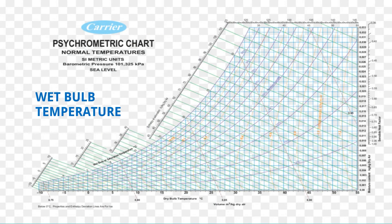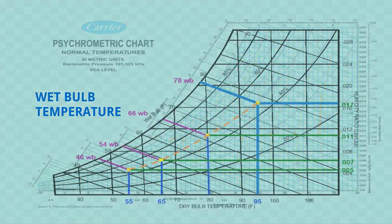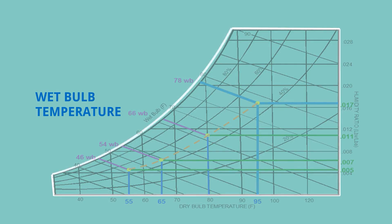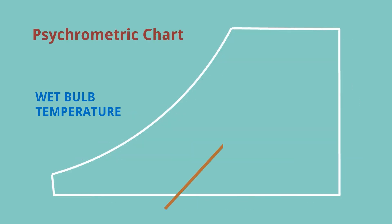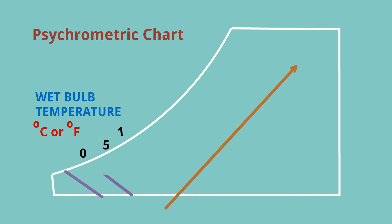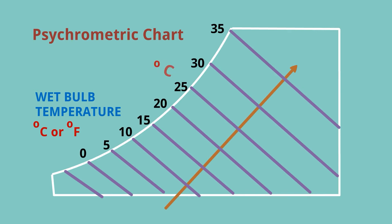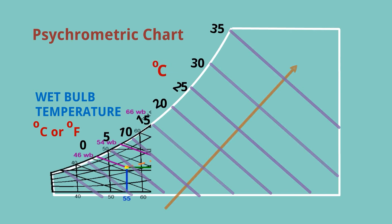This is a psychrometric chart and we will see the wet bulb temperature here. It is a simple ray diagram and the wet bulb temperature line lies here. Like dry bulb temperature, it is also measured in degrees centigrade or degrees Fahrenheit.